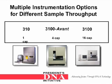There are multiple instrumentation options for different sample throughput. Here we have the 310, which has one capillary; the 3100-Avant, which has four capillaries; and the 3100, which has 16 capillaries.